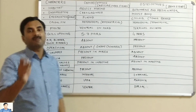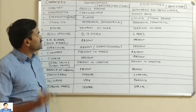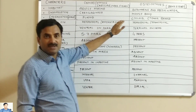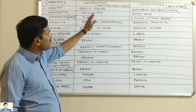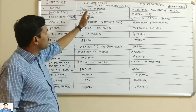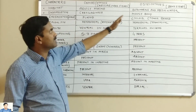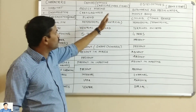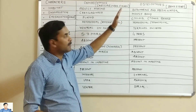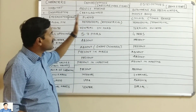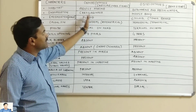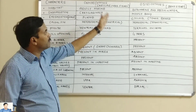Hello to all. Today we will be going to differentiate between the cartilaginous fishes and the bony fishes. Basically the fishes are divided into two categories. One is known as the Chondrichthyes and another is known as the Osteichthyes. Chondrichthyes means cartilaginous fishes, Osteichthyes means the bony fishes. Here are some prominent features which will differentiate the cartilaginous fishes and the bony fishes.